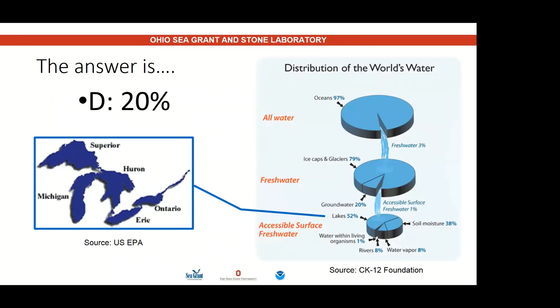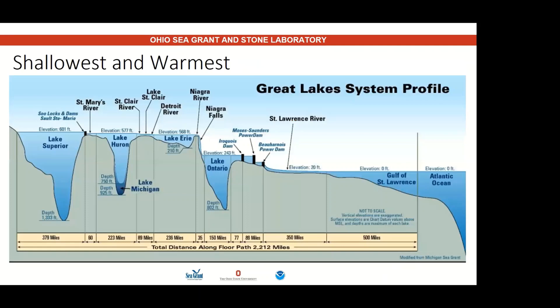This incredible resource is valuable not only for the water itself, but for all the living organisms that inhabit this ecosystem. Lake Erie is unique — it is the shallowest and warmest of the Great Lakes. This is a cross-section of the Great Lakes, and as you see here, Lake Erie is very shallow compared to its neighboring water bodies.